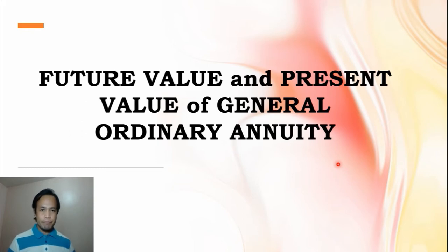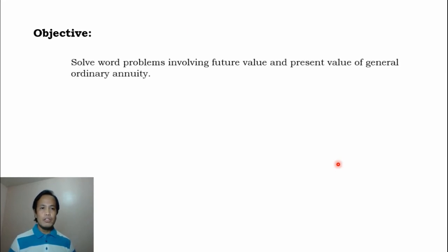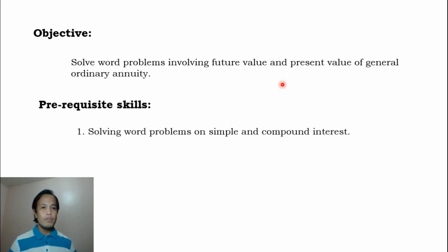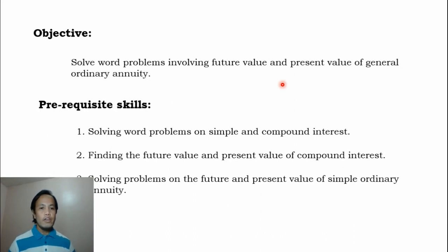To start, let us have the lesson objective first. At the end of this video, you are expected to solve word problems involving future value and present value of general ordinary annuity. We will differentiate simple ordinary annuity from general ordinary annuity. For the prerequisite skills, we have: number one, solving word problems on simple and compound interest; number two, finding the future value and present value of compound interest; and number three, solving problems on the future and present value of simple ordinary annuity.